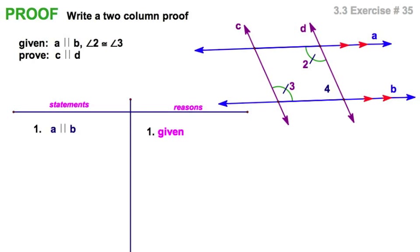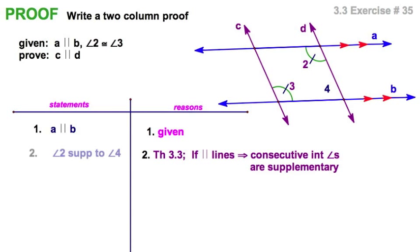And I know that these two have a relationship with this transversal and the blue parallel lines. They are consecutive interior angles. And I know that theorem three, three tells me consecutive interior angles are supplementary from theorem or from section three, two in your textbook. Therefore, angles two and four are supplementary.